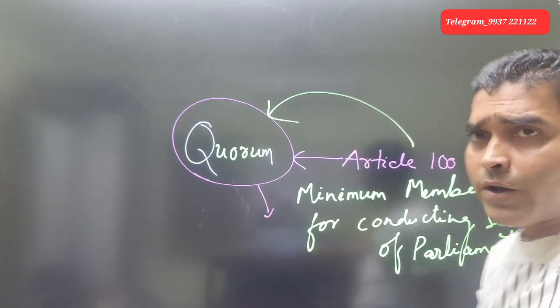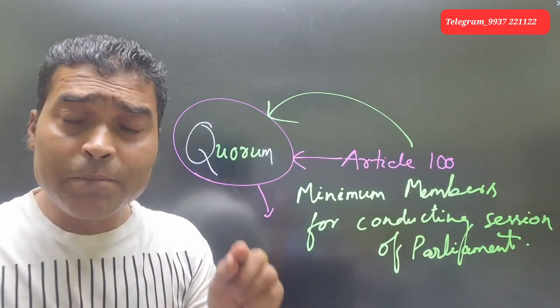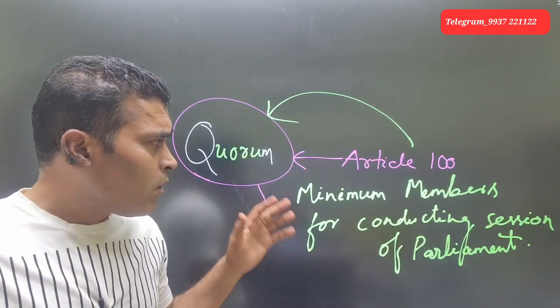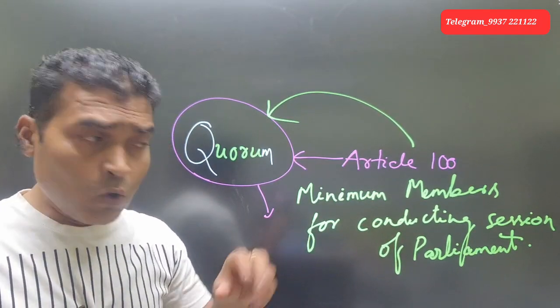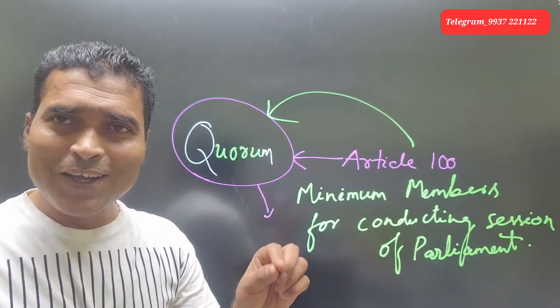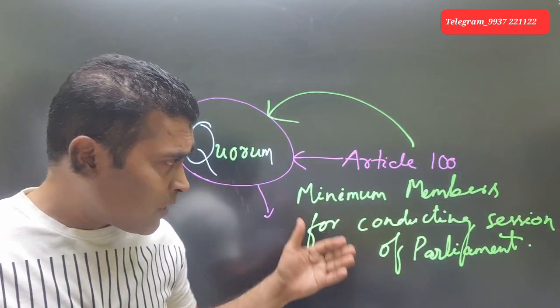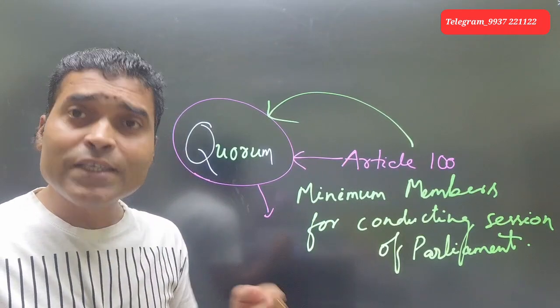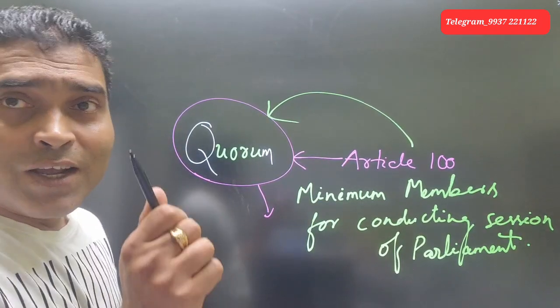Meaning, the speaker of Lok Sabha or chairman of Rajya Sabha will start the session with minimum number of members. So the session starts. That is actually quorum.